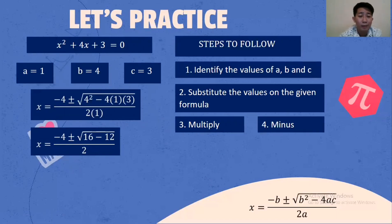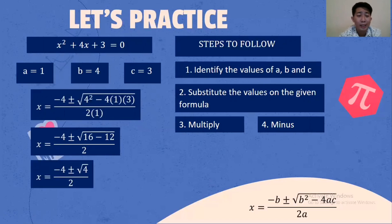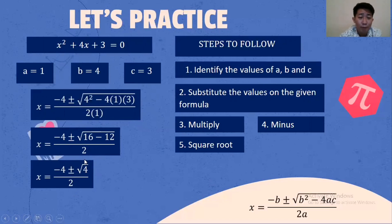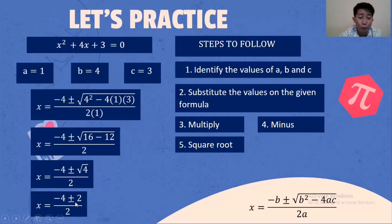Fourth step: 16 minus 12, that is 4. Bring down the remaining terms. Next step, find the square root. The square root of 4 is 2.